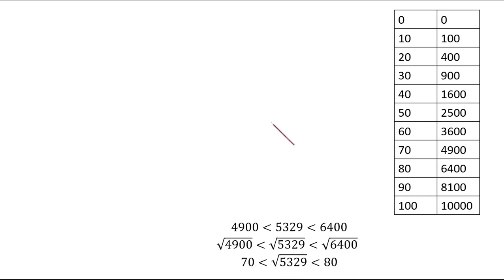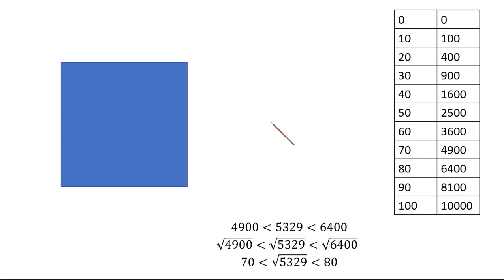So the first thing we come to know is that the answer lies in the 70s — the number could be 71, 72, and so on. Now consider a perfect square whose area is 5329.